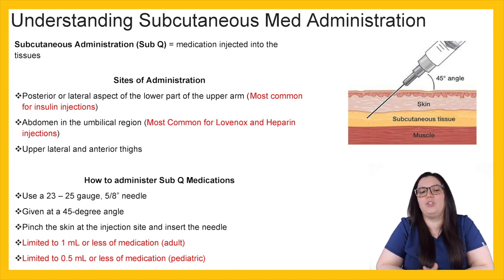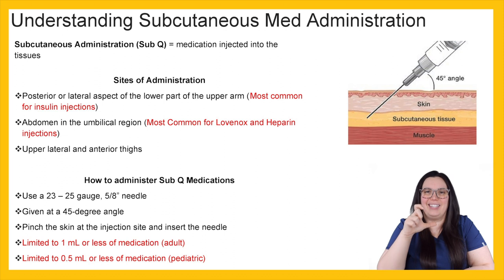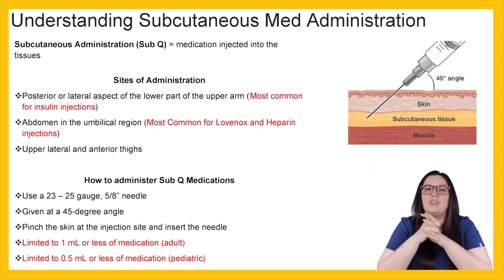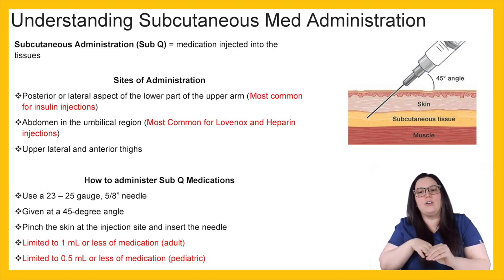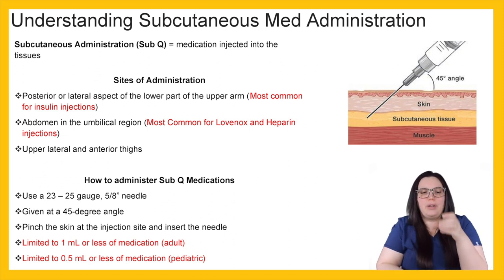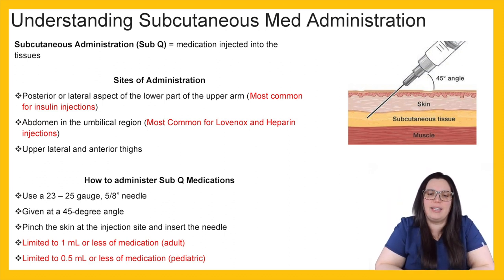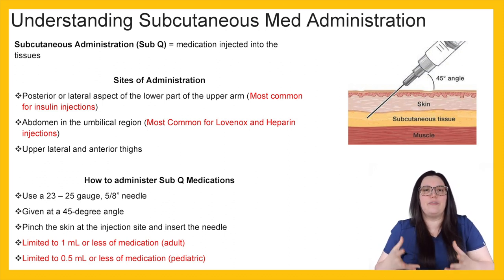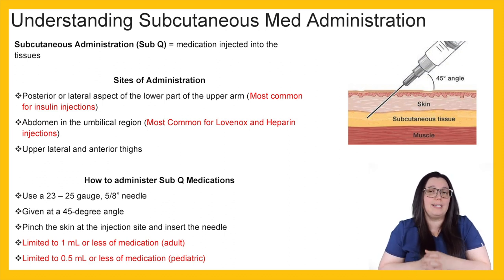How are we going to administer sub-Q medications? Typically you're going to use a 23 to 25 gauge with a five-eighths-inch length needle, given at a 45-degree angle — compared to intramuscular which goes straight down at 90 degrees. You want to pinch the skin at the injection site and insert the needle. When it comes to the amount of medication, adults are limited to 1 ml or less, and for pediatric populations we really don't want to give more than 0.5 mls for subcutaneous injections.